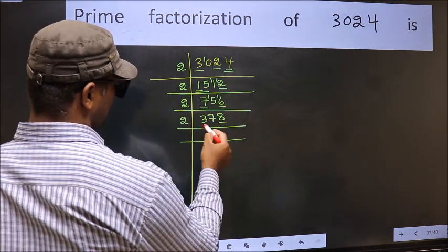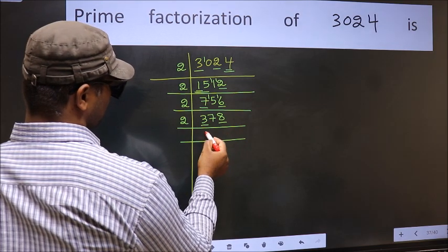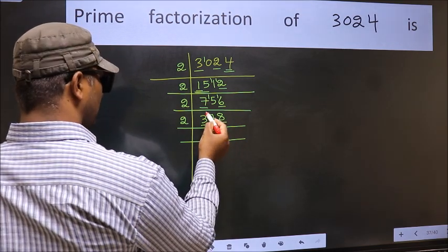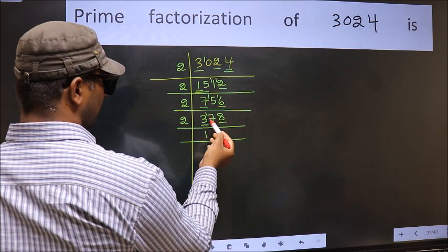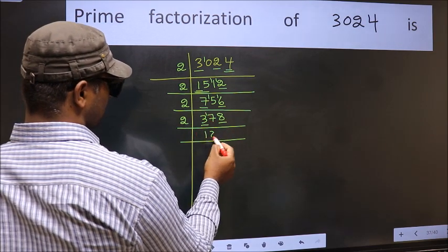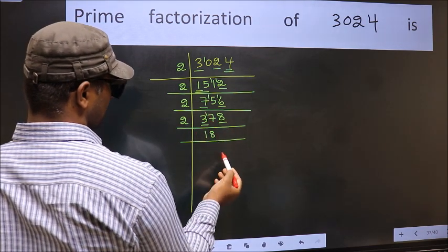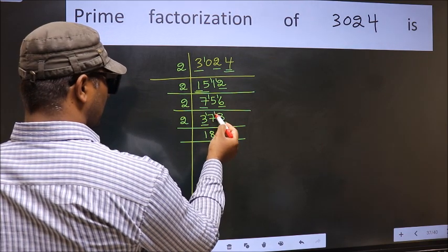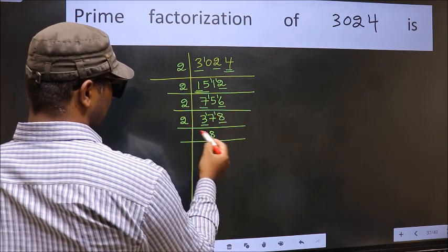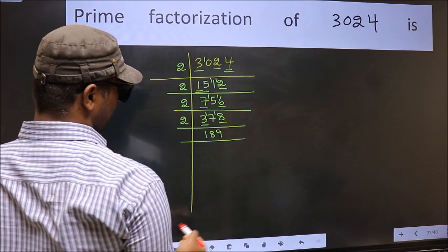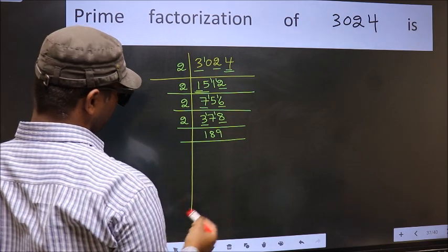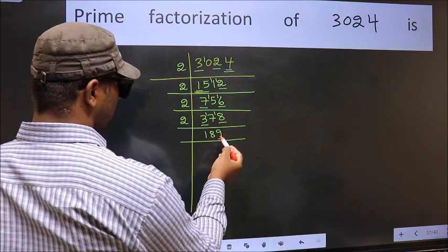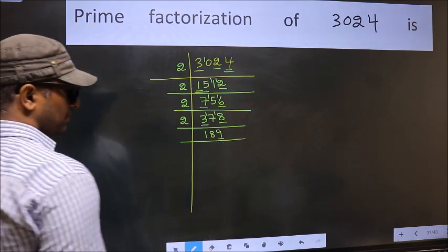First number 3 — a number close to 3 in the 2 table is 2 times 1 is 2. 3 minus 2 is 1, carried forward 17. A number close to 17 in the 2 table is 2 times 8 is 16. 17 minus 16 is 1, carried forward 18. When do we get 18 in the 2 table? Now the last digit is 9, so this is not divisible by 2.